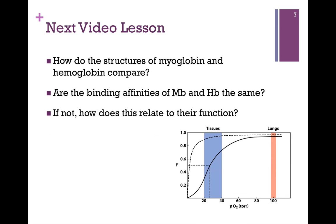In our next lesson, we want to compare the structures of myoglobin and hemoglobin. How do they compare in terms of their structures and their binding affinities? And if we see a difference, how does that relate to their biological function?